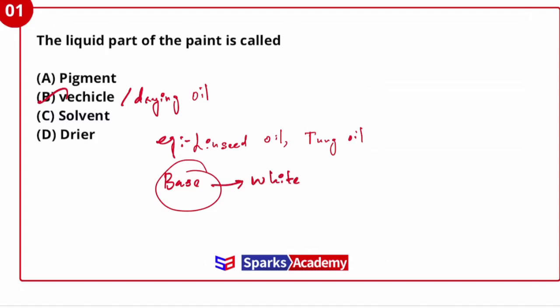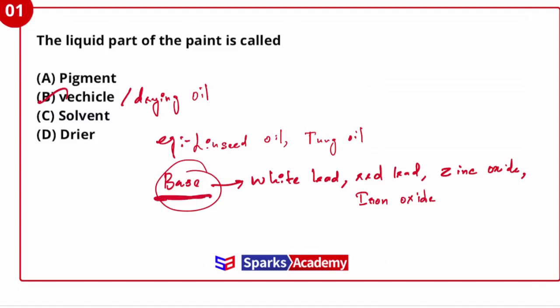Examples of base in paint: white lead, red lead, zinc oxide, iron oxide — these are base examples. Base has binding property; it provides paint with strength and prevents cracks. Extenders' examples are gypsum and calcium carbonate. Extenders are nothing but fillers, used to improve the flow property of paint.